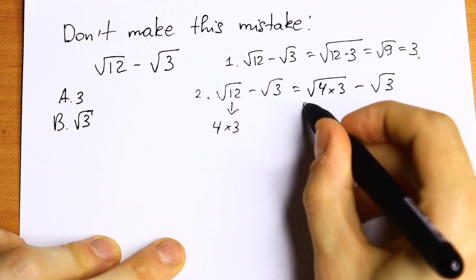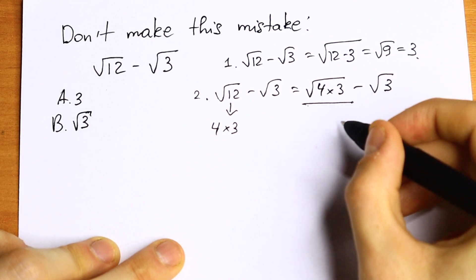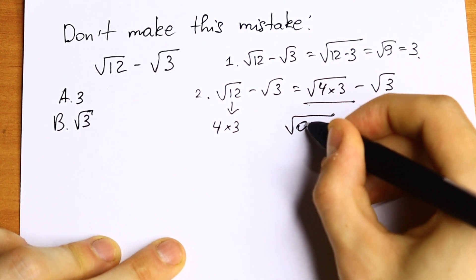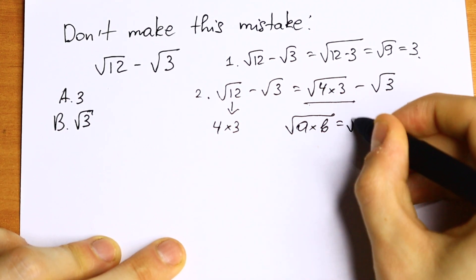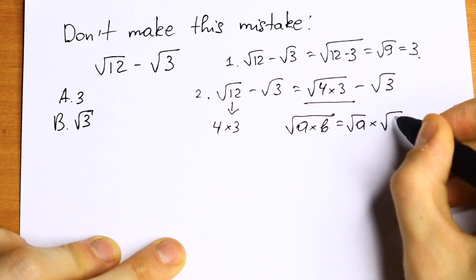Moreover, we need to know the rule. If we have a product in our square root sign, so if we have square root of a times b, we can write it as square root of a times square root of b.